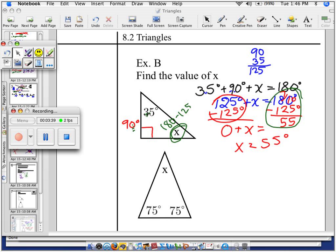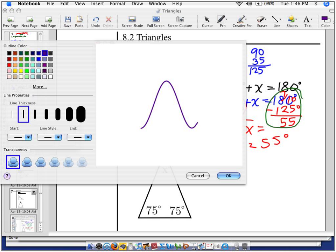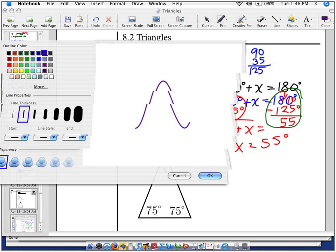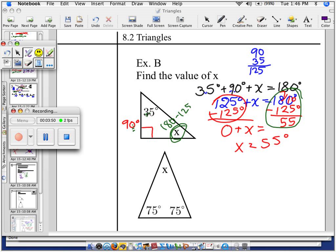All righty. On the next one, what we have is 75, 75, and X. So 75 plus 75 is 150 degrees. In a whole triangle, how many degrees are there? 180. So these two are already 150. So how much is left over for the triangle? 30 degrees. So that's another quick way to figure it out. The unknown angle is 30 degrees.